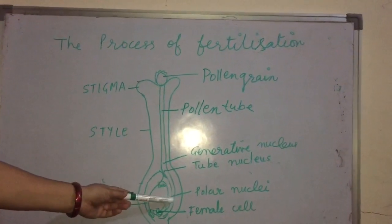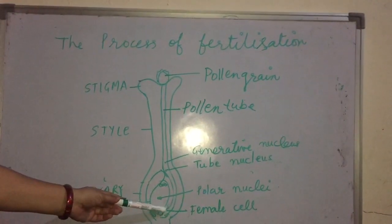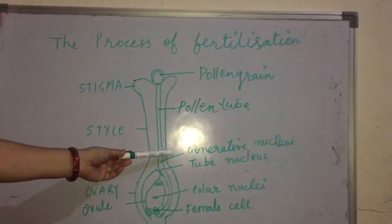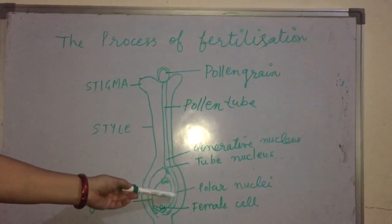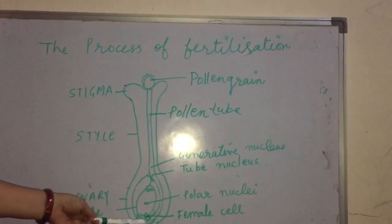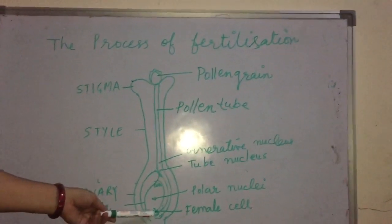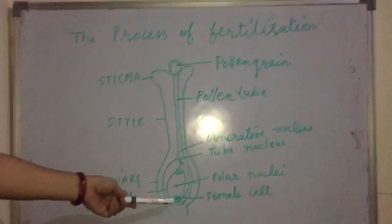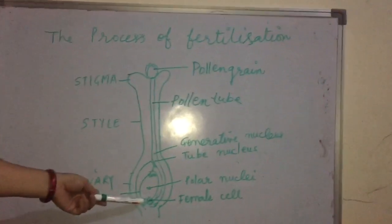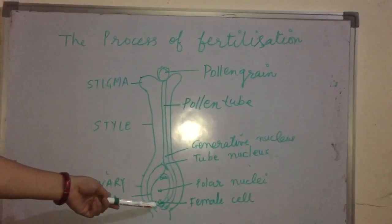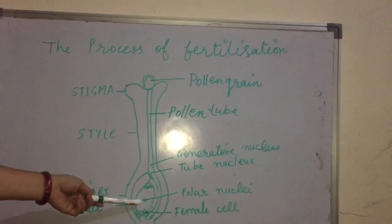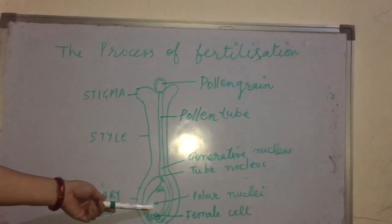The tube nucleus gives the direction of the growth of the pollen tube. The generative nucleus will divide into two male gametes or two male cells. Once it enters the ovule from the micropyle end, one of the male gametes fuses with the female gamete or the female cell and forms the zygote. This process of fusion of male and female gametes to form a zygote is termed as fertilization. The other male gamete fuses with the polar nuclei and forms the endosperm.